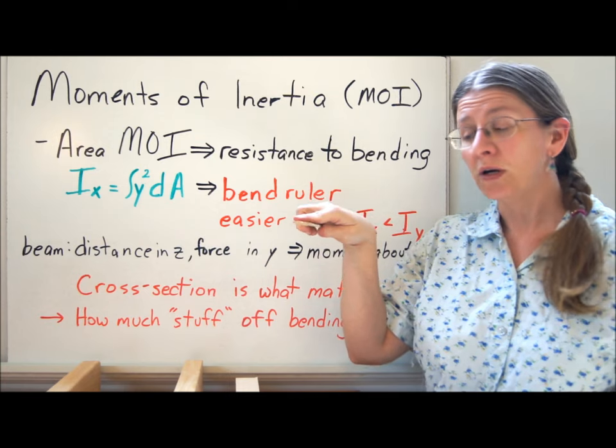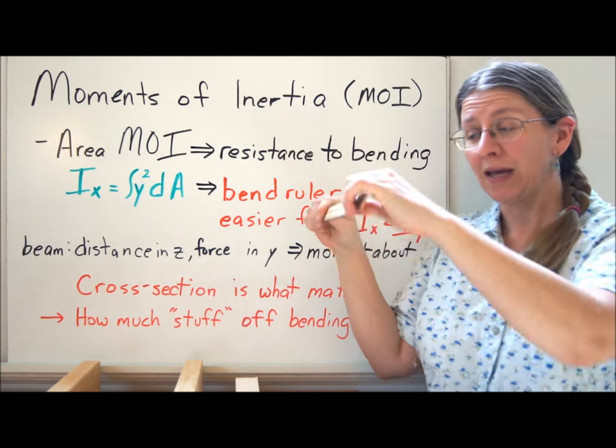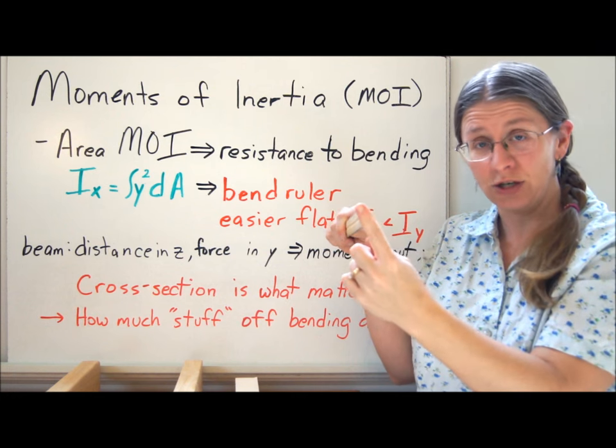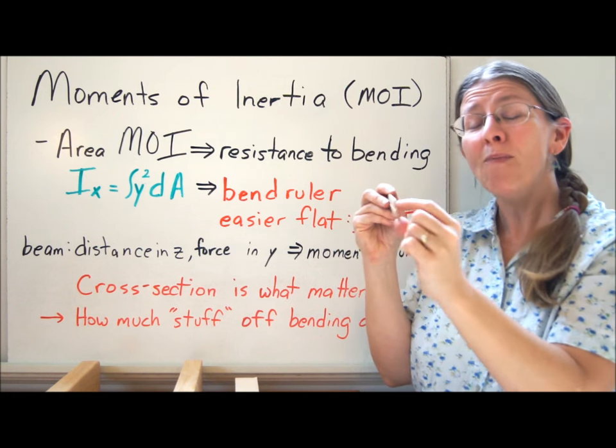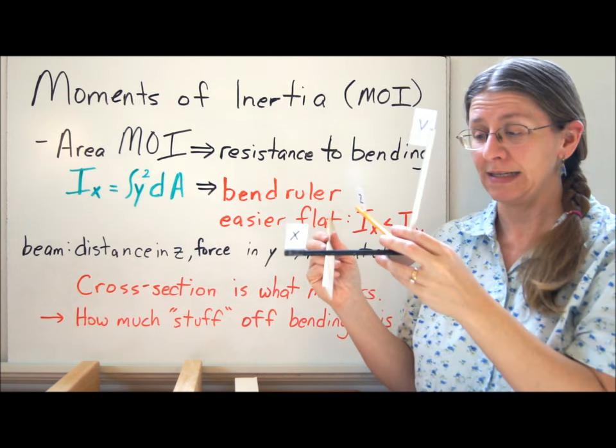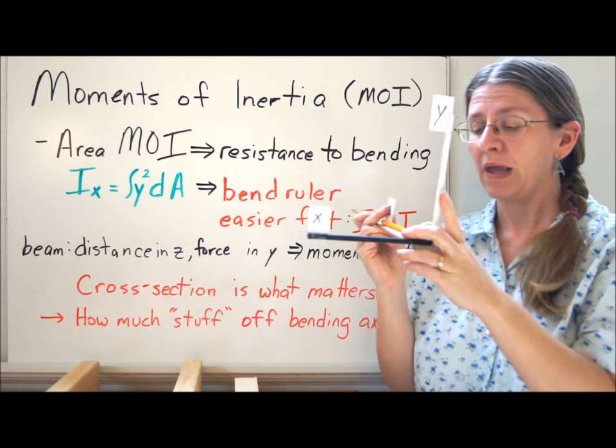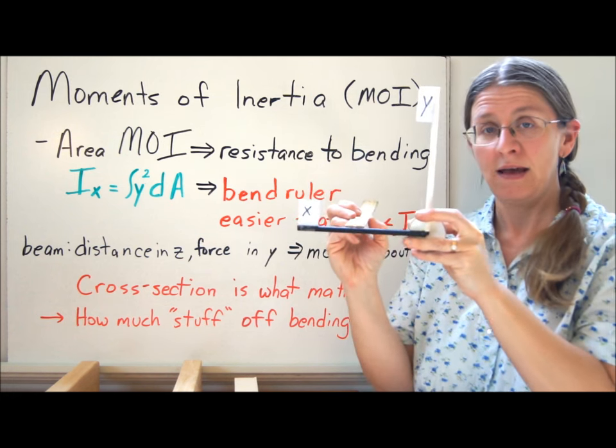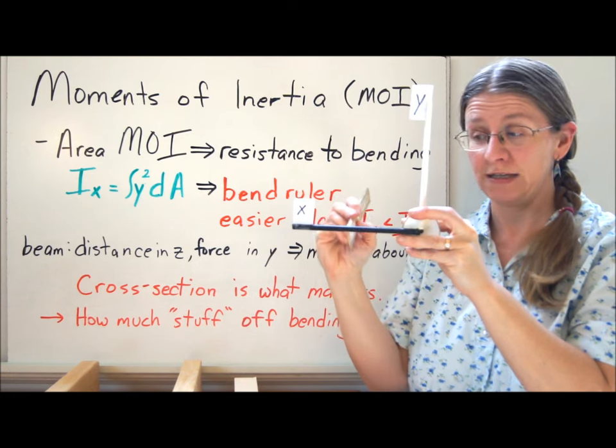If you take a ruler, the difference between bending it this way and turning it over and trying to bend it that way is what the cross section looks like. How much stuff is away from this x axis? So here's my beam. What I want to know is how much of the material is on this axis and how much of it is off the axis.